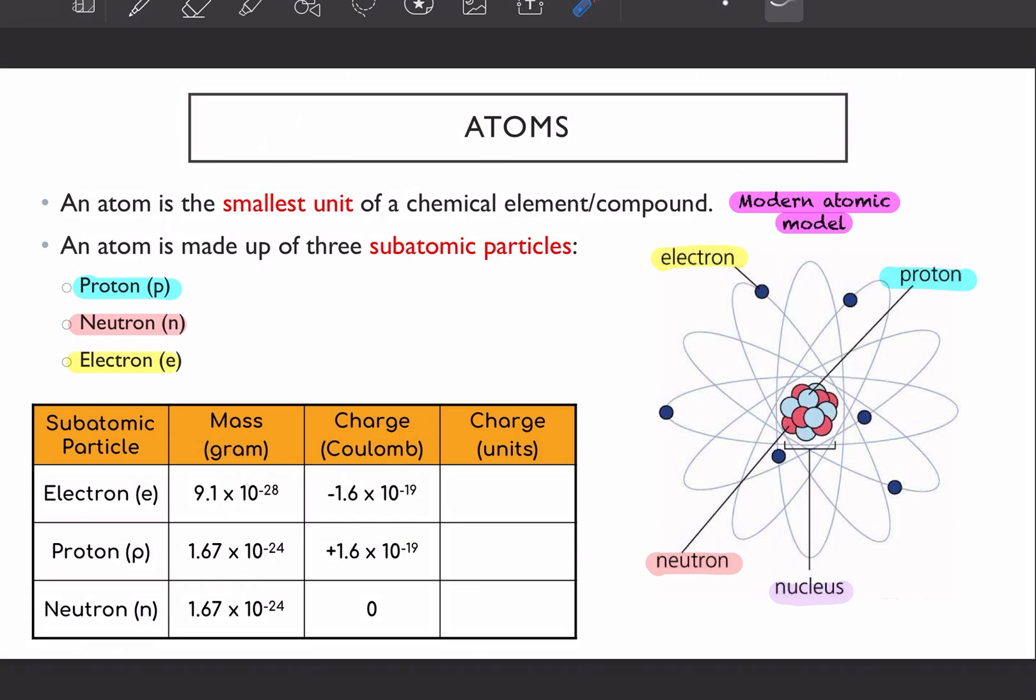So for electron, it is negative 1. For proton, it is positive 1. And neutron is zero. That's how you get the relative charge for your subatomic particles.